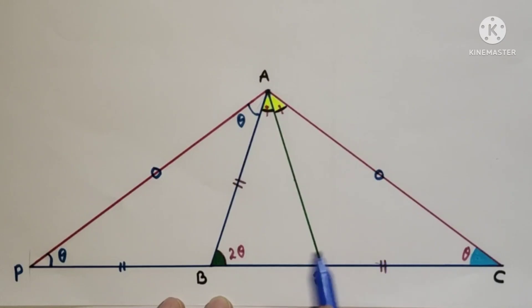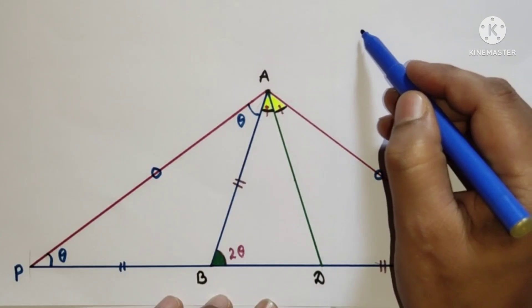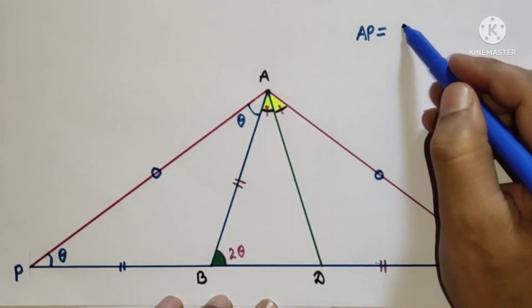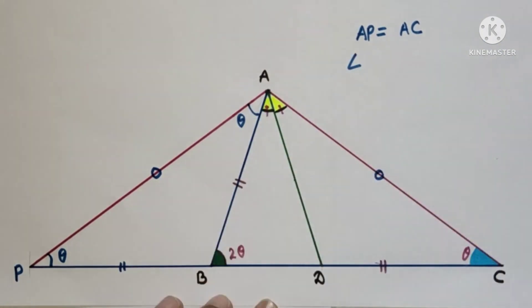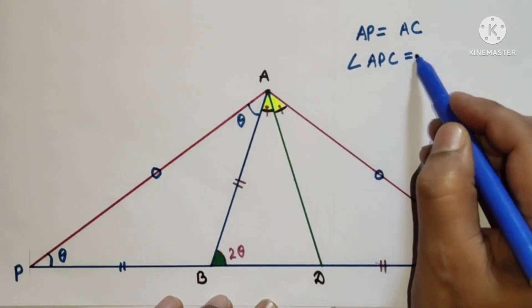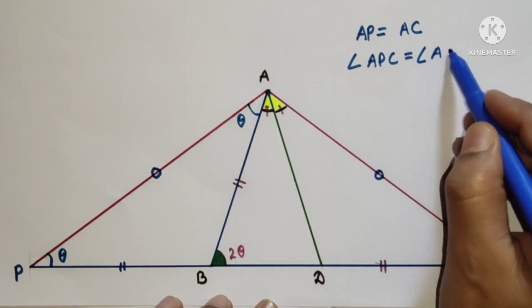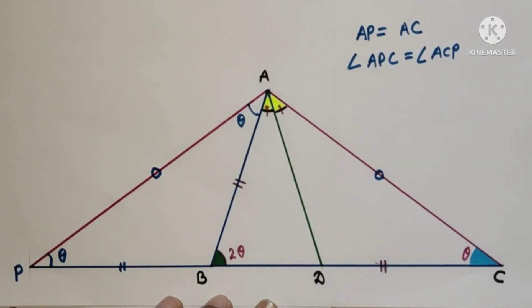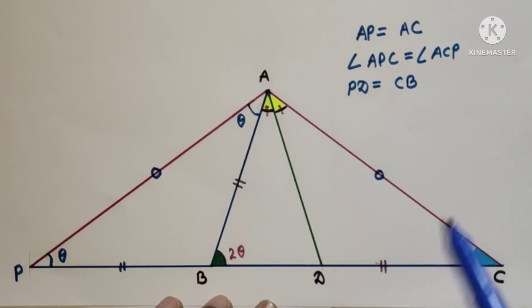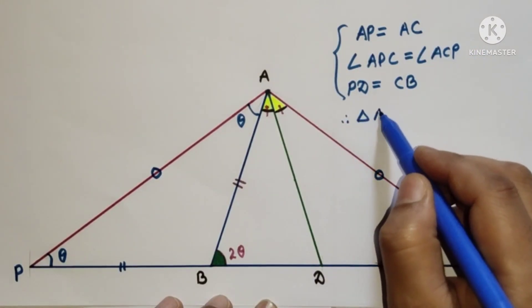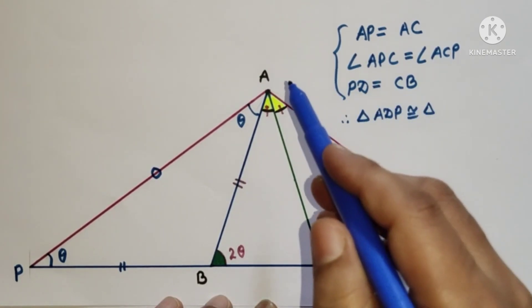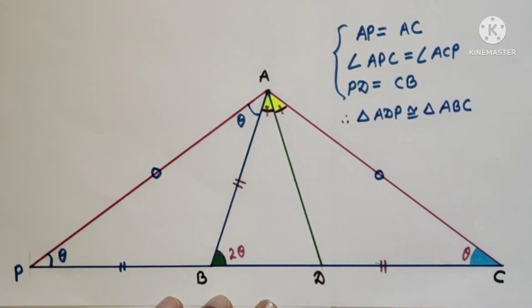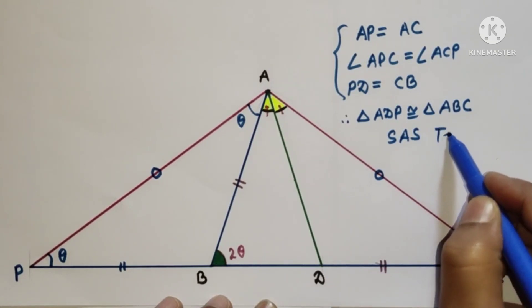Since AP is equal to AC, we now consider two triangles APD and ACB. AP is equal to AC, angle APC equals θ, and PD is equal to CB because PD equals CB and DC equals CB. Therefore triangle ADP is congruent to triangle ABC by the Side-Angle-Side (SAS) test of congruency.